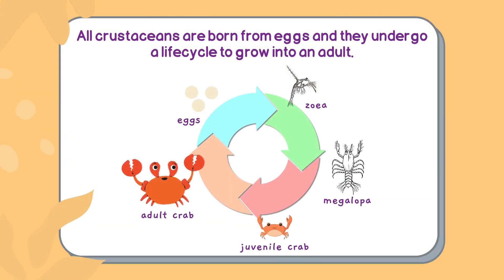All crustaceans are born from eggs and they undergo a life cycle to grow into an adult. Look at the crab there — this is how a crab hatches out of an egg and grows into an adult crab.